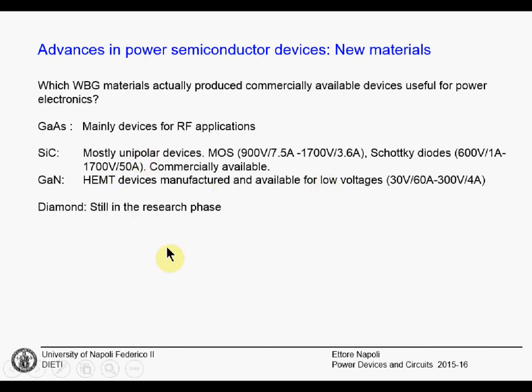Then we have diamond. For diamond, we don't have commercially available devices — we are still in the research phase. Some Schottky diodes have been demonstrated: manufactured, measured, and characterized, but without any commercially available product. There is one research proposal for a kind of MOSFET in diamond — it's more a claim than a real device, more like 'we were able to do something and it looks like a MOSFET.' We are still very early.